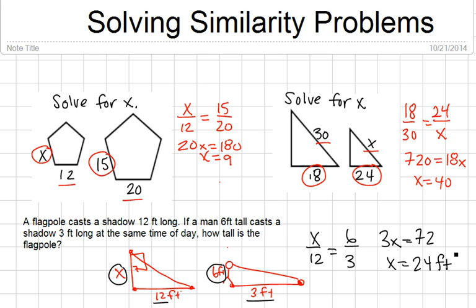So the best way to solve similarity problems is to set up proportions. You need to set proportions with corresponding sides. And so you need a firm understanding of what would correspond. And then once again, on all of these examples, on all three of these examples, you could have set up different proportions and still got the same answer.